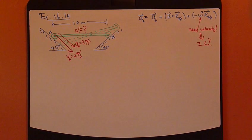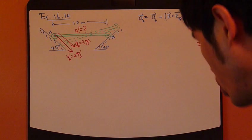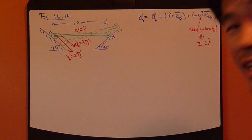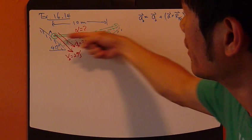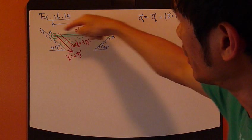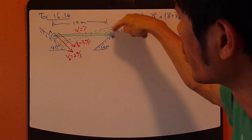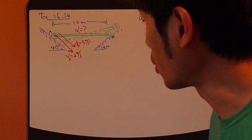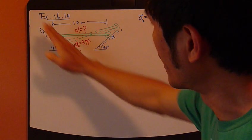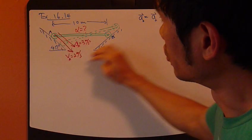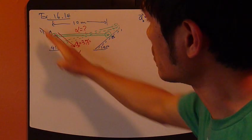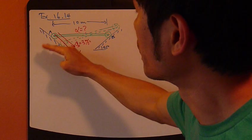Let's look at this example from the textbook 16.14 on page 366. Now we have a rigid body, a rod, attached to two wheels, two rollers on each side. And these rollers are confined to roll on these two slopes, each at a 45 degree angle.